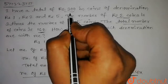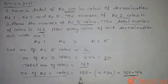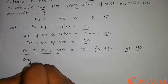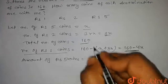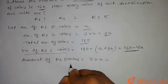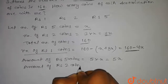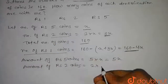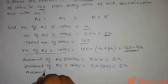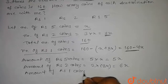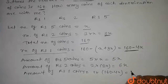In the question, it is given that I have a total of Rs.300. This Rs.300 will be the sum of the amounts from Rs.1, Rs.2 and Rs.5 coins. The amount from Rs.5 coins will be 5 into x, that is 5x. The amount from Rs.2 coins will be 2 into 3x, that is 6x. And the amount from Rs.1 coins will be 1 into (160 minus 4x), giving us 160 minus 4x.